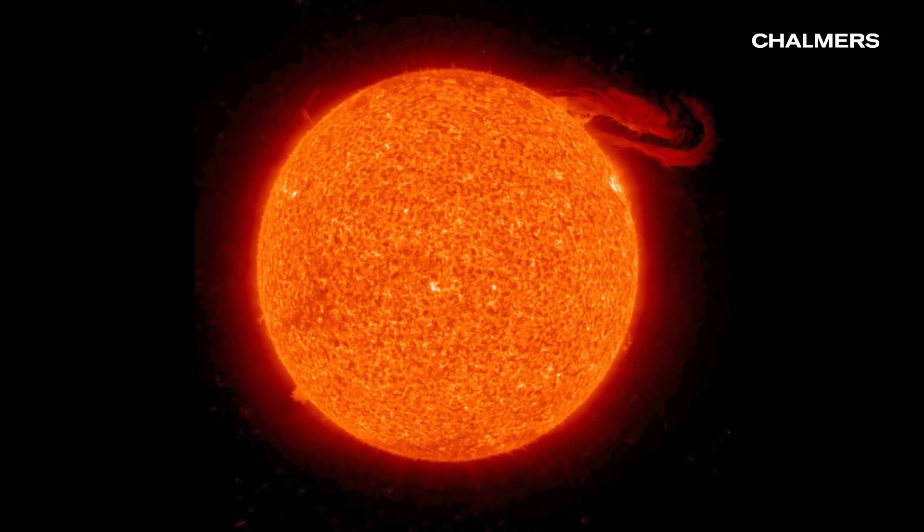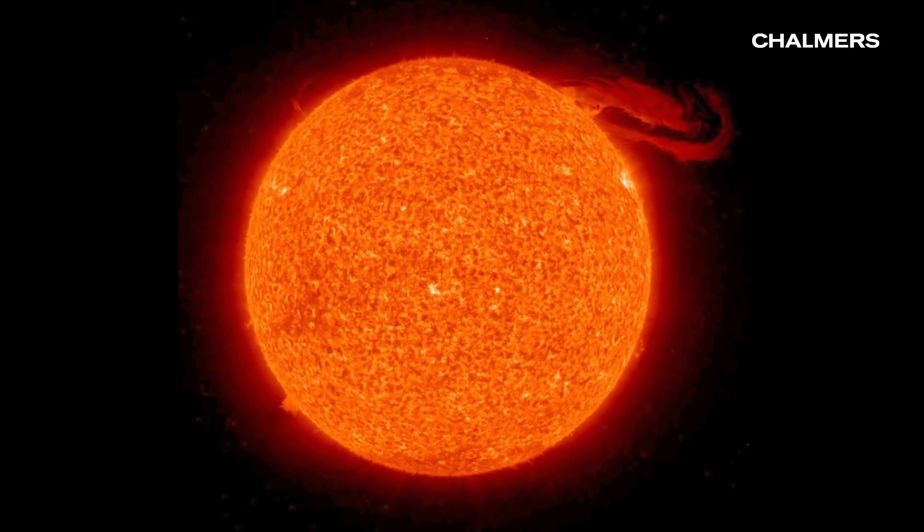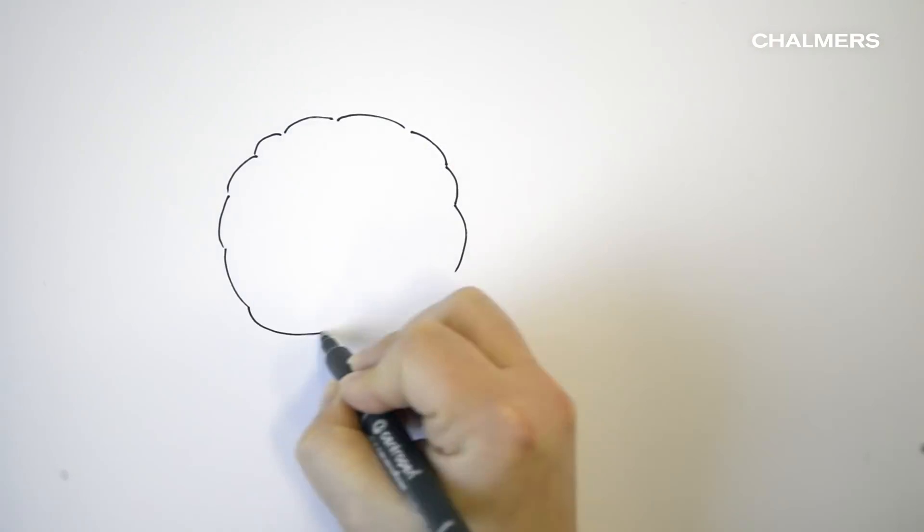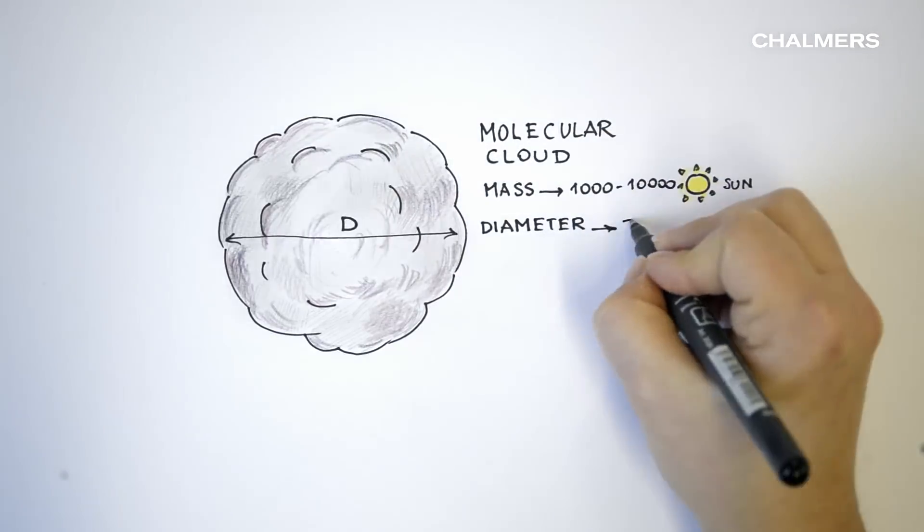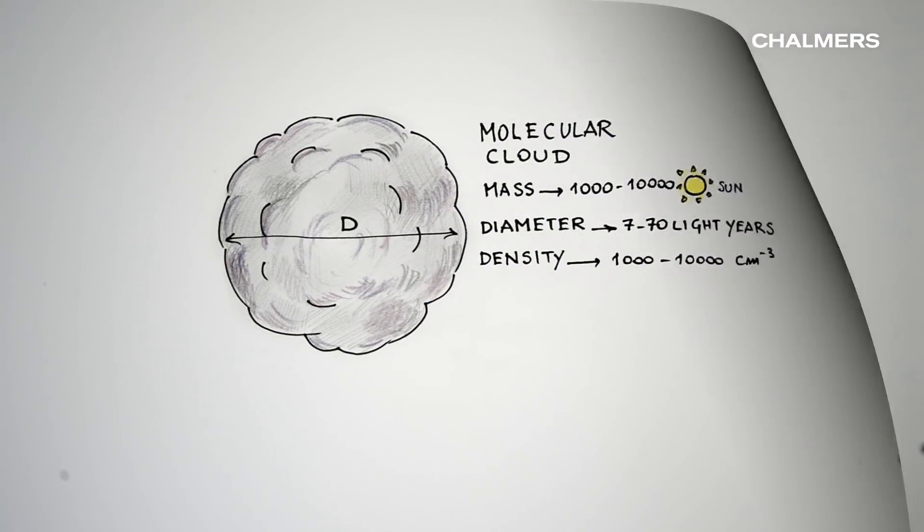The Sun formed 4.6 billion years ago and we have a pretty good idea how this happened. It all begins in a molecular cloud, a gigantic cloud of gas made of atoms and molecules that is just floating around in space.